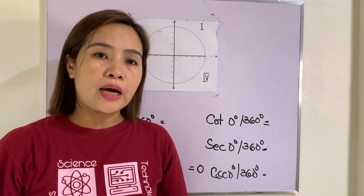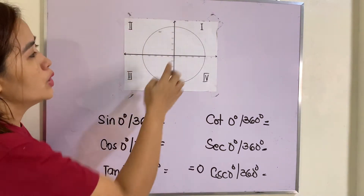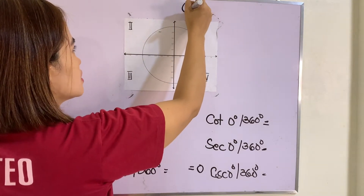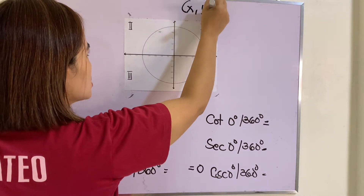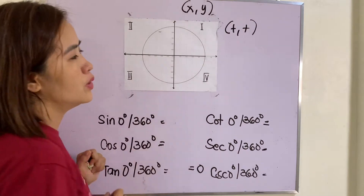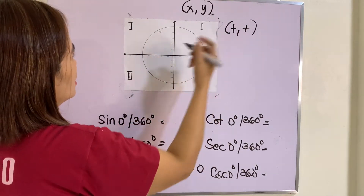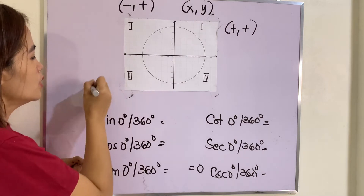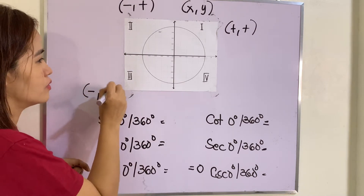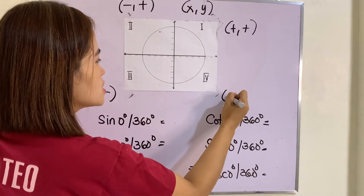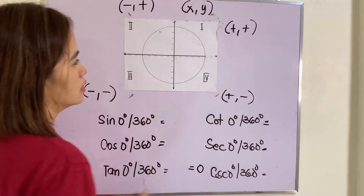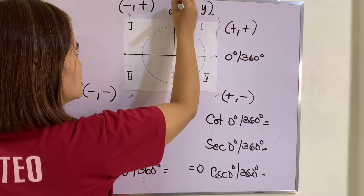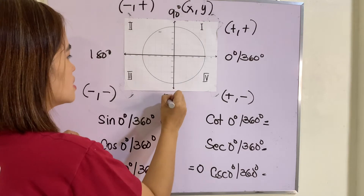How are we going to apply these six circular functions in a unit circle? We know that this is quadrant one, quadrant two, quadrant three, and quadrant four. In quadrant one, x is positive and y is also positive. In the second quadrant, x is negative and y is positive. In the third, x is negative and y is negative. In the fourth, x is positive and y is negative. The angle at the right is zero degrees or 360, this one is 90, this one is 180, and this one is 270.